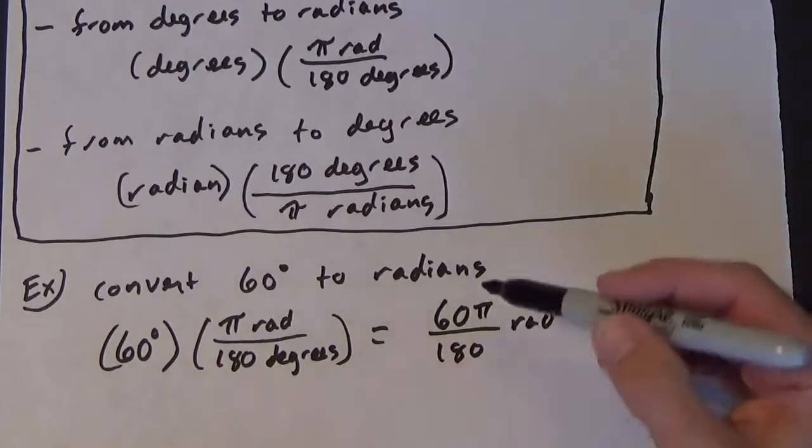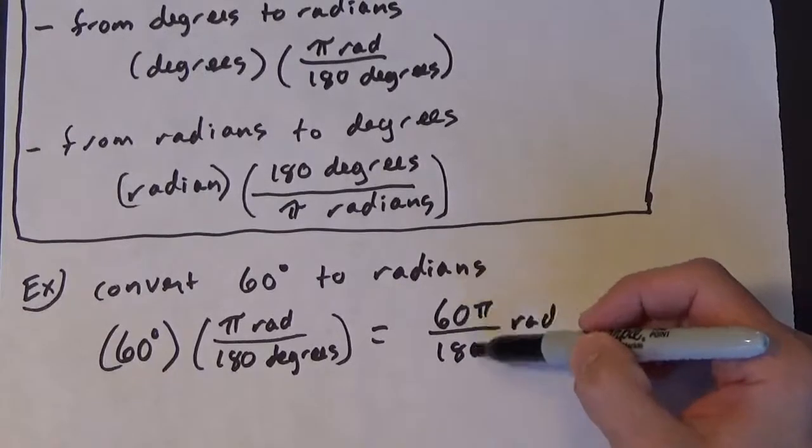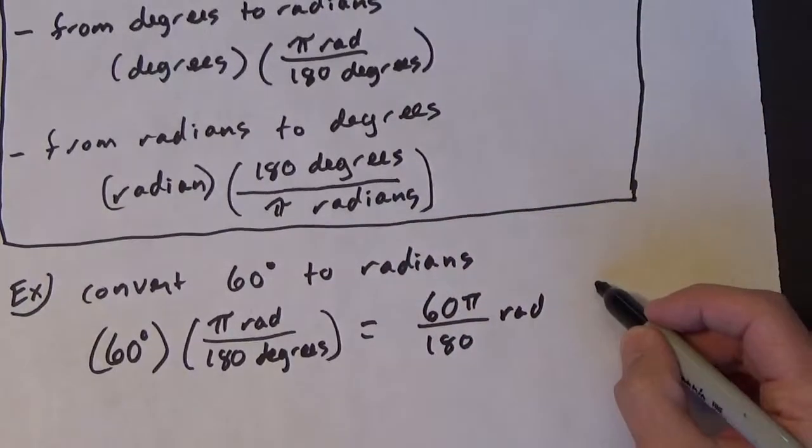And then we have to simplify this. So 60 and 180, when the zeros cancel out, it's pi over 3.